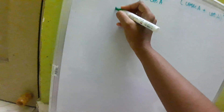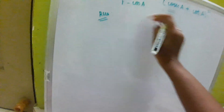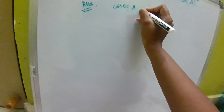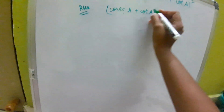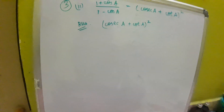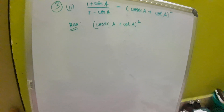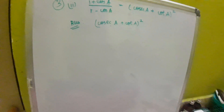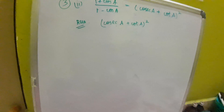First, we are going to take the RHS because we are starting with the more complicated side. We are taking cosecant A plus cot A, the whole square, and we are going to split it using the cosecant formula and cot formula.